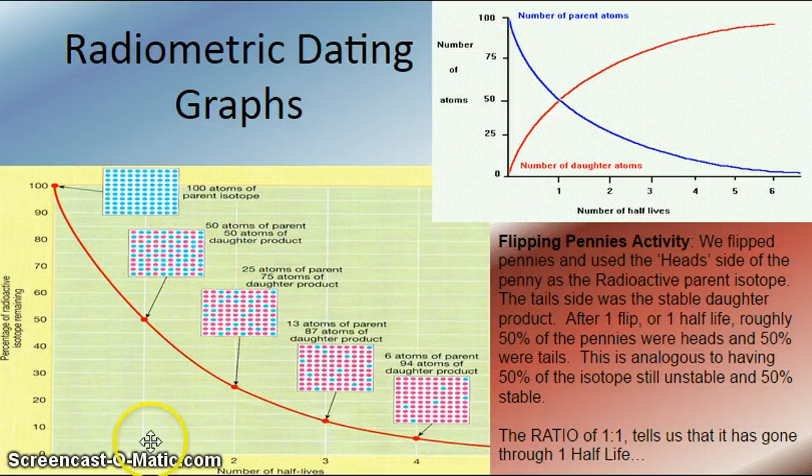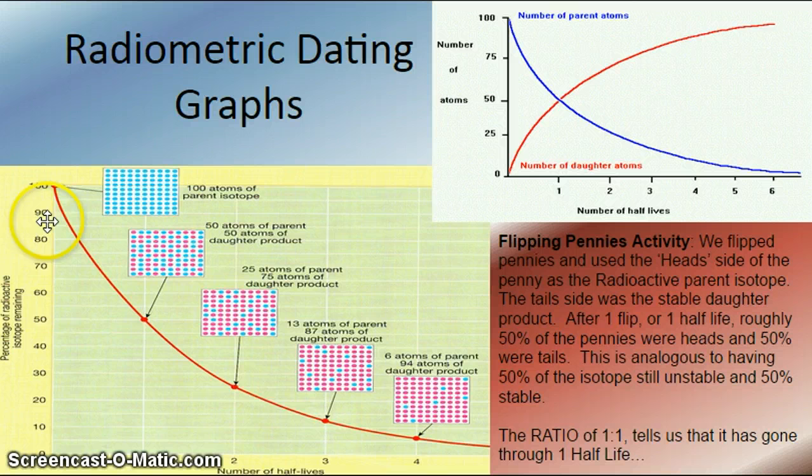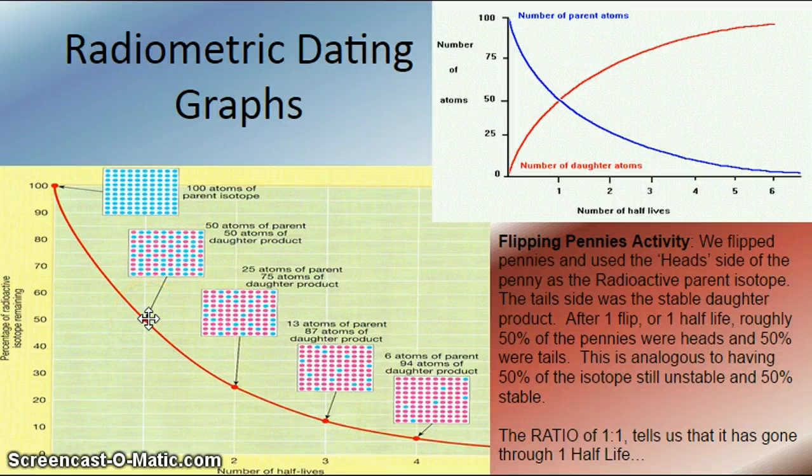And if it goes through yet another second half-life, notice my x-axis here. These are my number of half-lives, where my y-axis here is the percentage, or the total number of radioactive element. So as I'm losing parent, I'm gaining daughter. And we'll look at this graph here in just a moment.